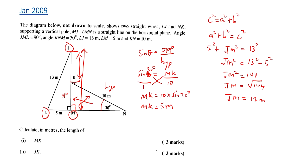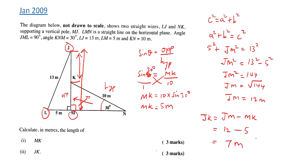We worked out JM = 12m, but they want JK. So JK = JM − MK = 12 − 5 = 7 meters. This was pretty straightforward — just look at the diagram; all the information is provided.